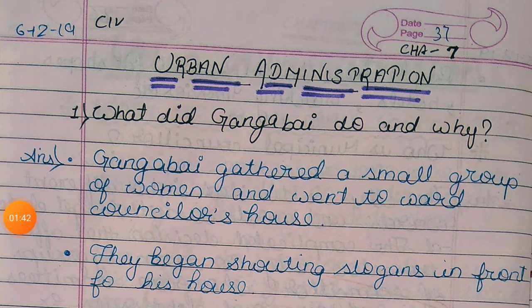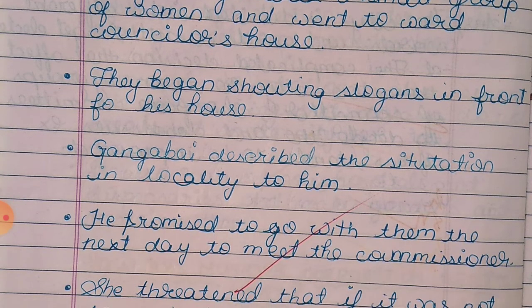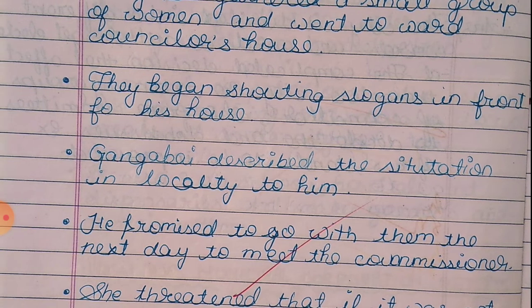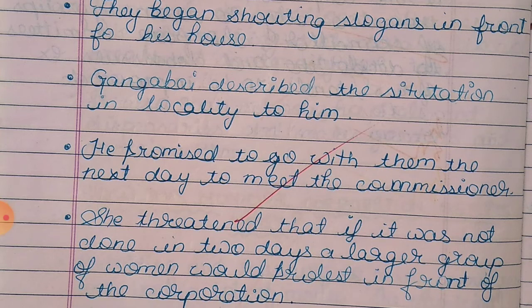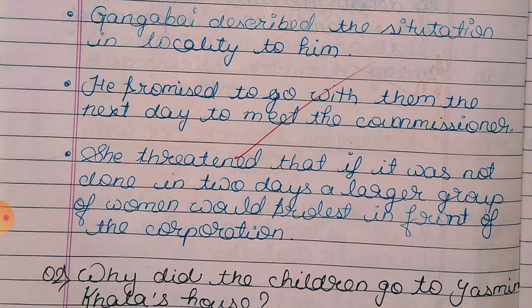Urban Administration Question and Answers. What did Ganga Pai do and why? Ganga Pai gathered a small group of women and went to the councillor's house, where they began shouting slogans. She described the situation in the locality to him, and he promised to go with them the next day to meet the commissioner.